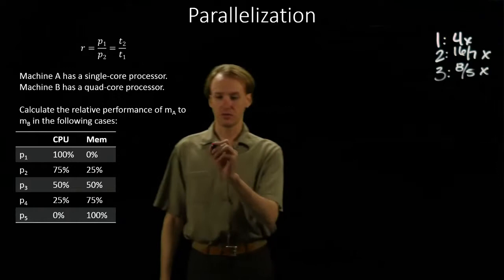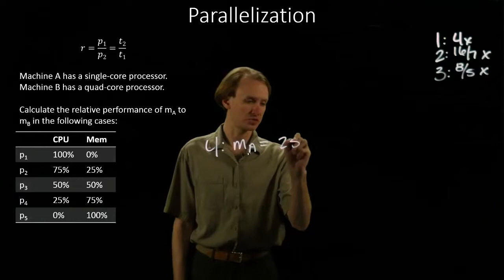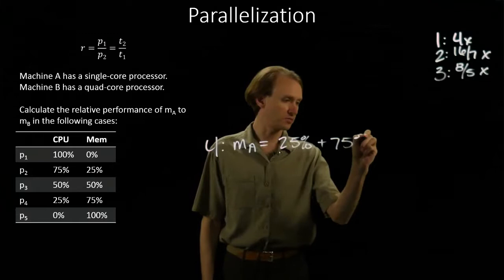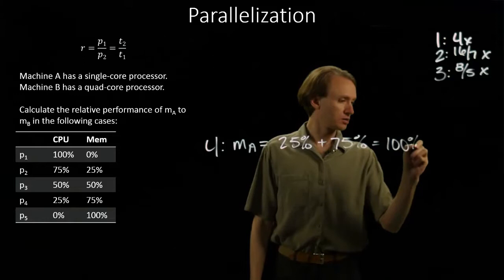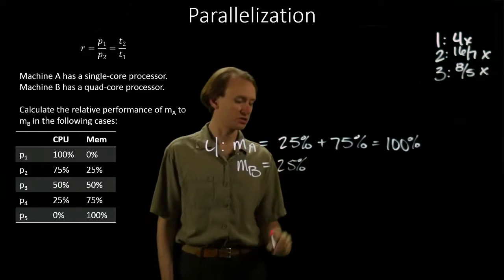For part four, Machine A is the same sort of thing. This time it spends twenty-five percent of its time running the CPU instructions, and the other seventy-five percent running the memory instructions. So it's still spending a hundred percent of its time on the task. Machine B has that same twenty-five percent of the instructions. They still take one-fourth as much time on Machine B.